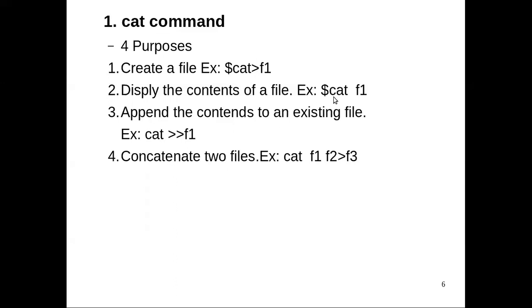For displaying the content of a file, the syntax is simple: cat command followed by the name of the file will display the content of that file. Next, if a file already exists and we need to add more data along with the existing data, we use two greater-than symbols. Cat followed by two greater-than symbols followed by file name — whatever data you type from the keyboard will be appended at the end of the existing content of file f1. That is another purpose of the cat command: appending content into an existing file.